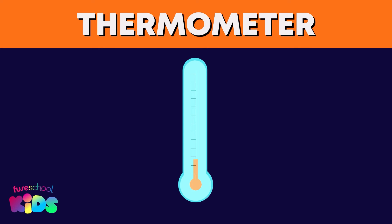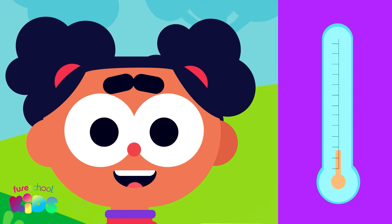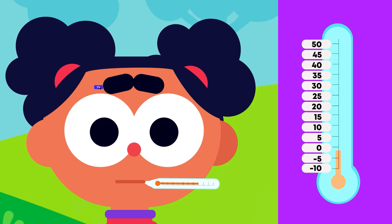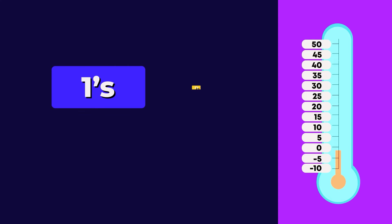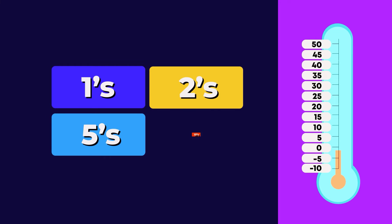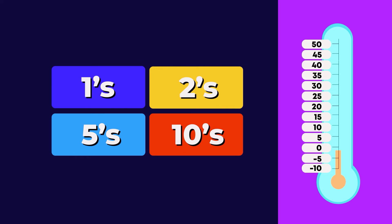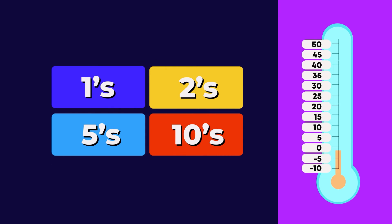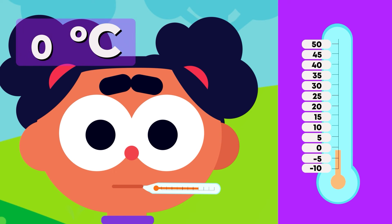I can measure my temperature using a thermometer. What scale is this thermometer going up in — 1s, 2s, 5s, or 10s? It's going up in 5s. Good spotting!